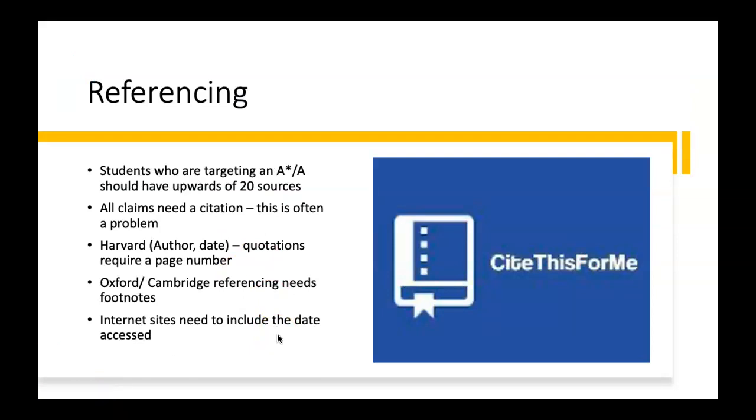In terms of referencing, I can't stress this enough. This is something that AQA look for very carefully. Students who are targeting an A star and A should have upwards of 20 resources, sources. And some students go up to 50 or 60. All claims within the report need a citation. And this is very often a problem. So if you could identify some places where you can see students are not citing. So any kind of statistic or claim or fact that is not commonly known, that could be interpreted differently, will need a citation.